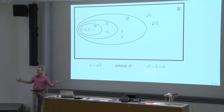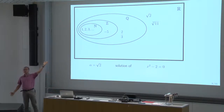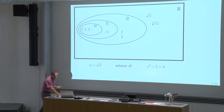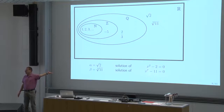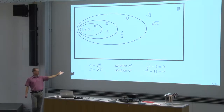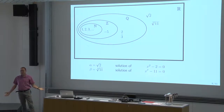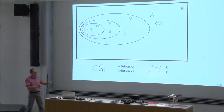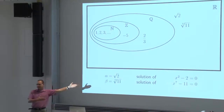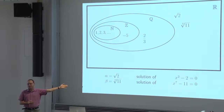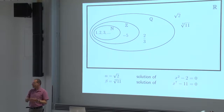Let's look at another real number: 7th root of 11. This is also a real number, but it's also not too complicated. It is a solution of x to the 7th minus 11 equals 0. So there are solutions of these equations made out of integers — they have powers of x and everything else is integers, so in a way they are made out of integers.